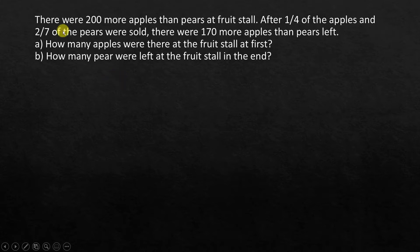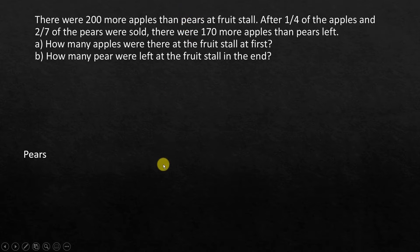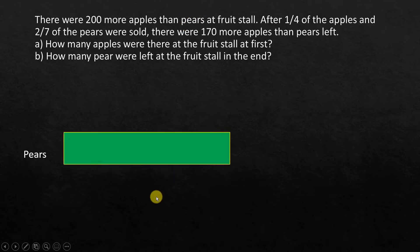So let's take a look at this question. Initially there were 200 more apples than pears at the fruit stall. Here, after 'more than,' what comes is pears. So pears is our reference — we are basing it on pears. So we are going to draw a model for pears. Let this model represent the total number of pears at the fruit stall.